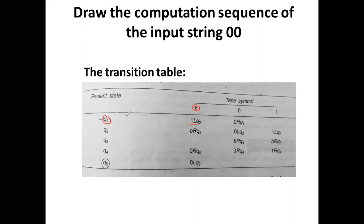If q1 reads zero, it will replace zero by zero, the read-write head moves to the right side, and it will go to the q1 state. That is all for the transition explanation in Turing machines.